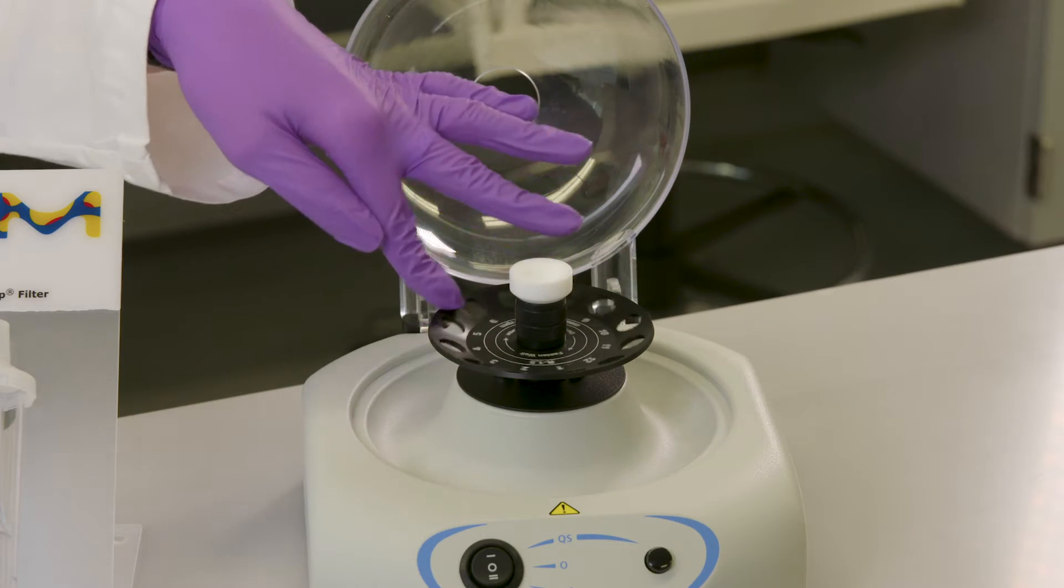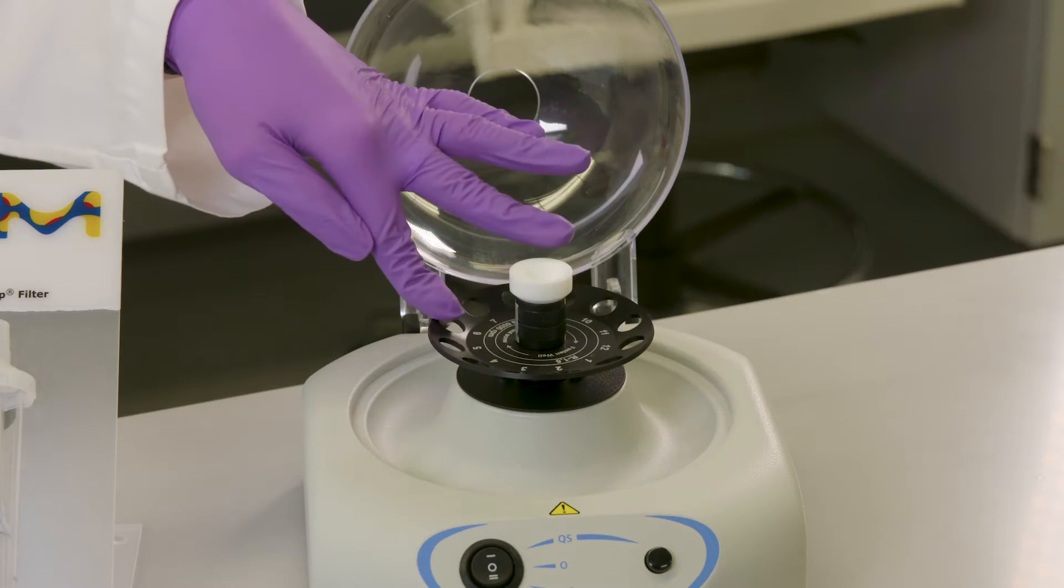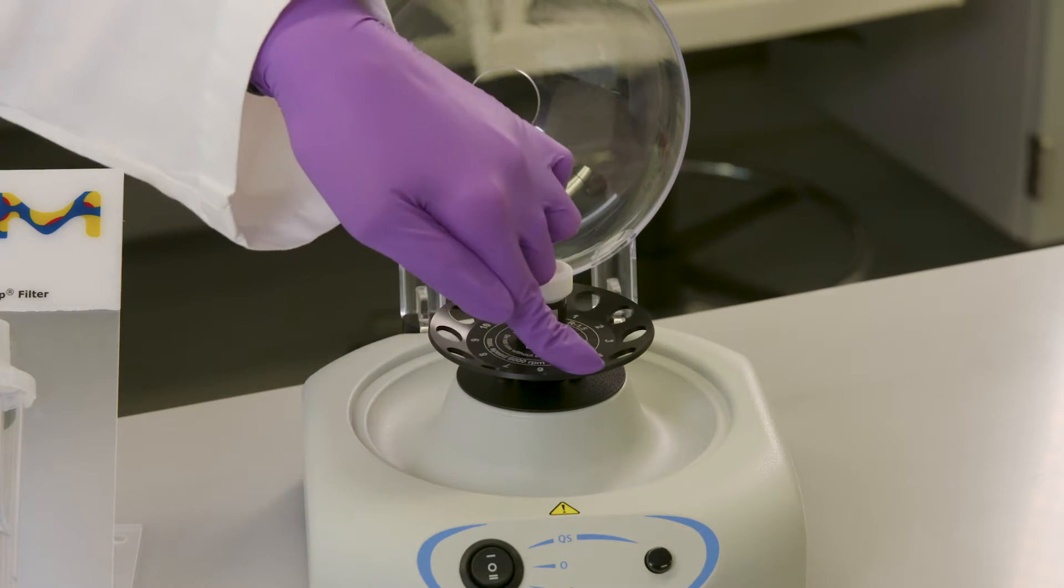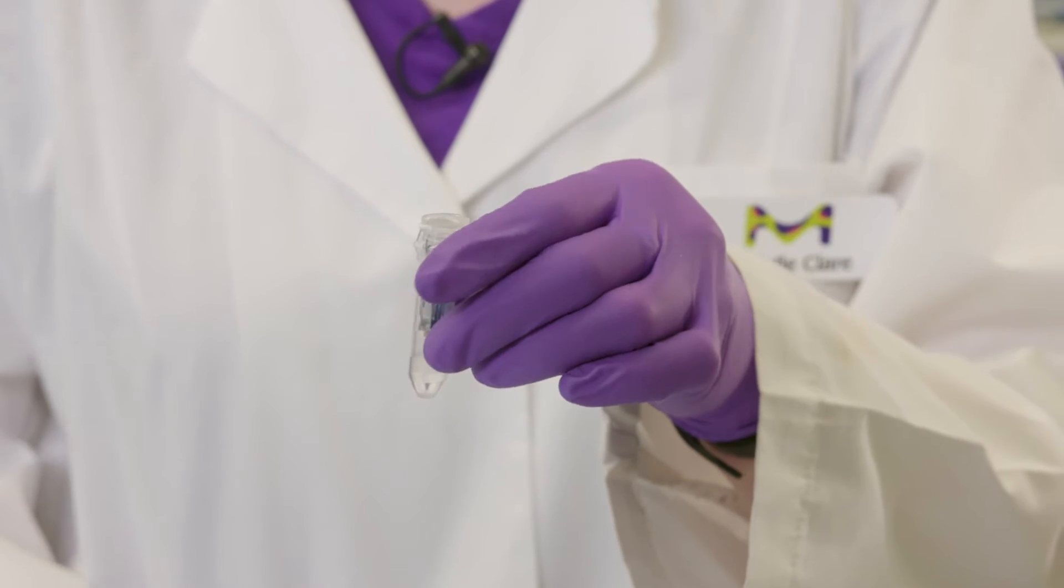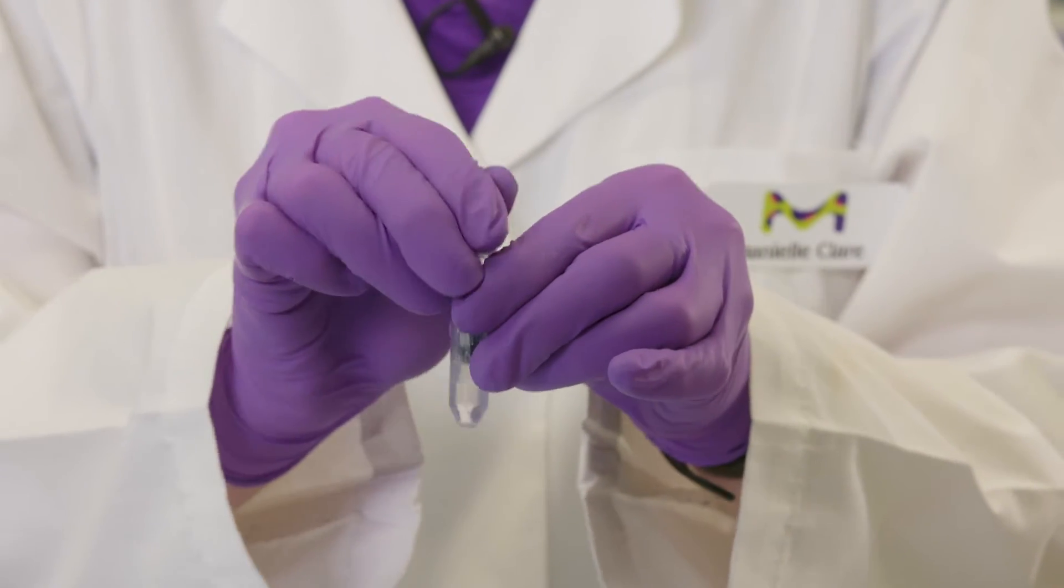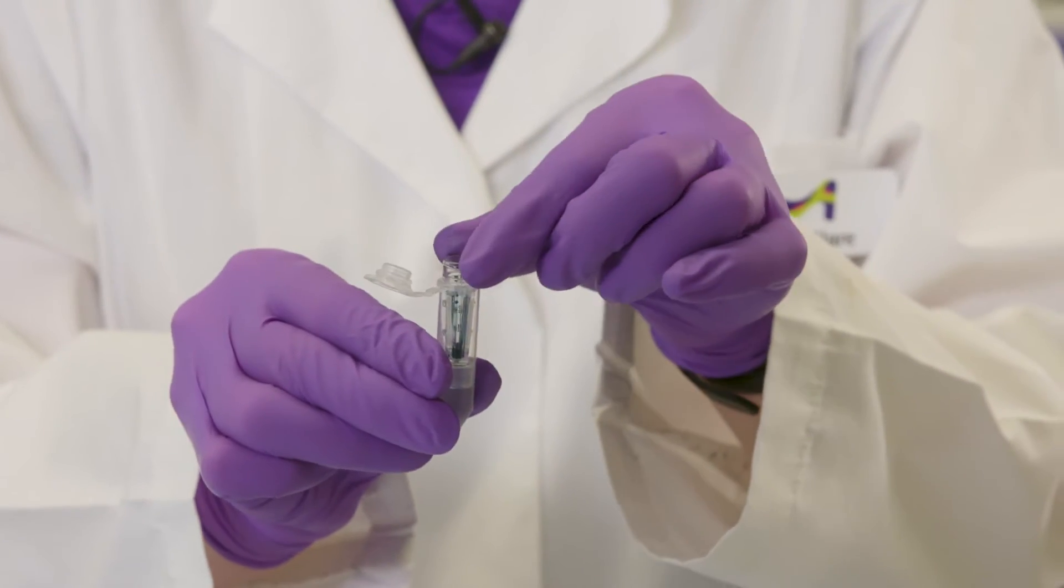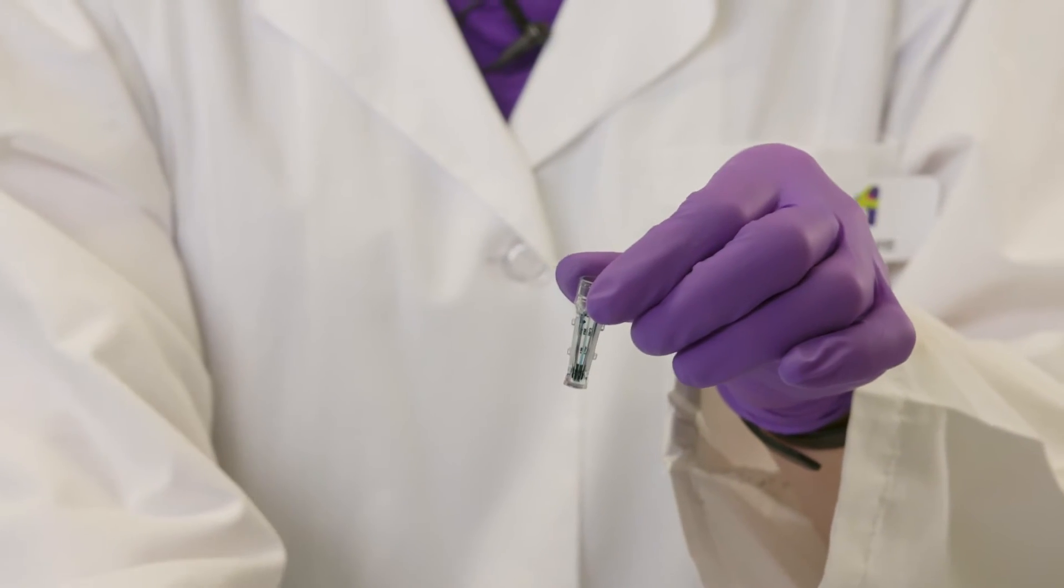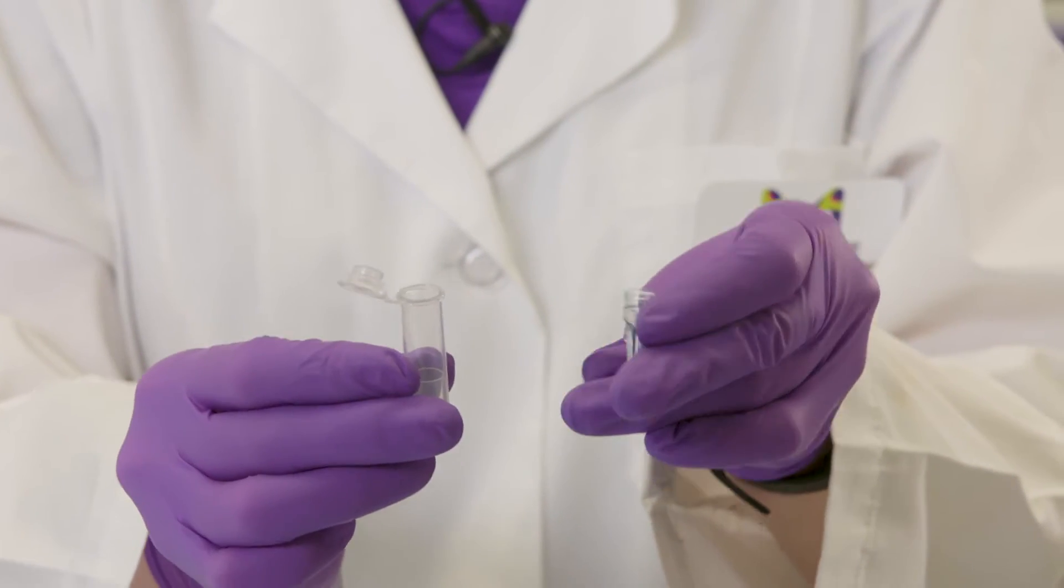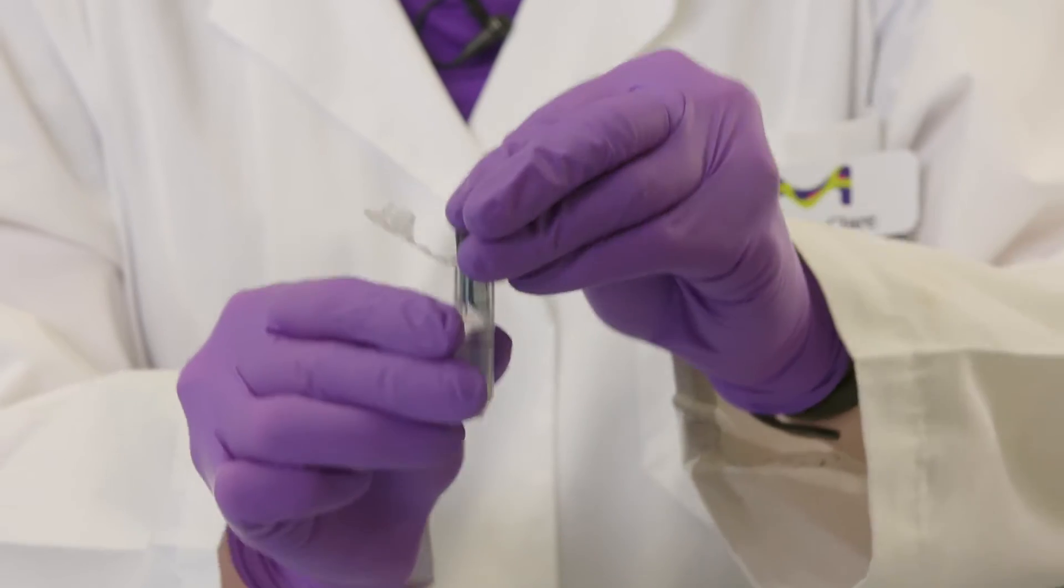Let me say up front that a reverse spin is not reversing the direction of the spinning centrifuge. It simply refers to inverting the concentrator into a collection tube and centrifuging again to get every drop of precious concentrated sample into the collection tube.